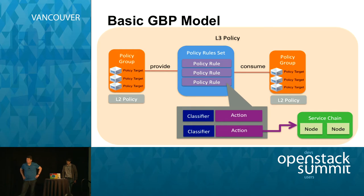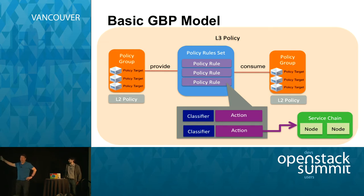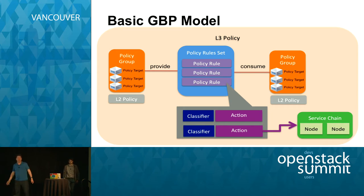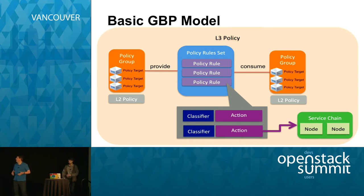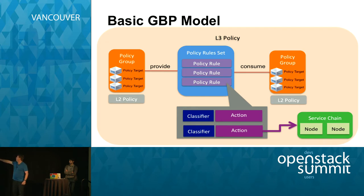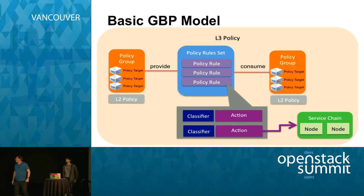The basic model: most of the names on this diagram are names of REST resources. L3 policy is a non-overlapping address space - subnets get allocated within that and are routable within that. Tenants can create one or more of those; they get created for you by default. The L2 policies down here - the policy groups you see are contained in L2 policies, normally one gets created for each group. That controls your broadcast domain - a lot of times applications don't need to worry about that.